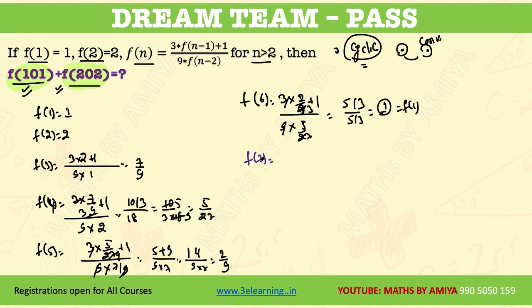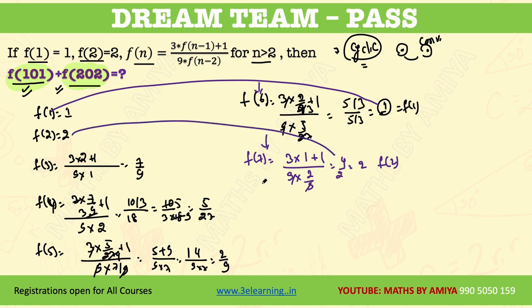Find F(7). F(7) is 3 into F(6) which one is 1, F(1), plus 1 into 9 into F(5) is equal to 2 by 9. This one is cancel out, 4 by 2 is 2, is nothing but F(2). So we got F(1) is equal to F(6), F(2) is equal to F(7). It means it's a cyclicity of 5. We need to work on cyclicity of 5.